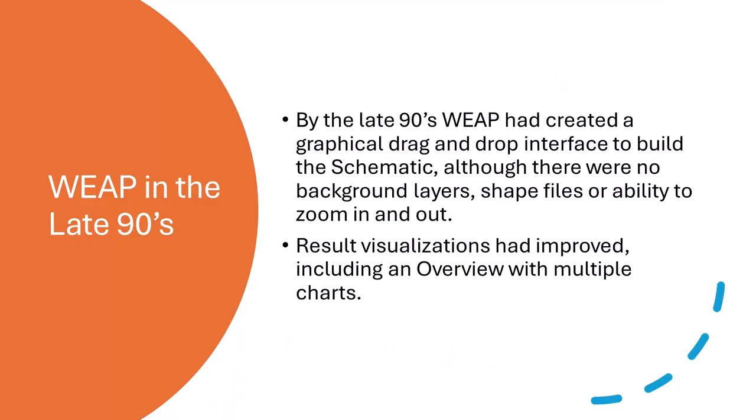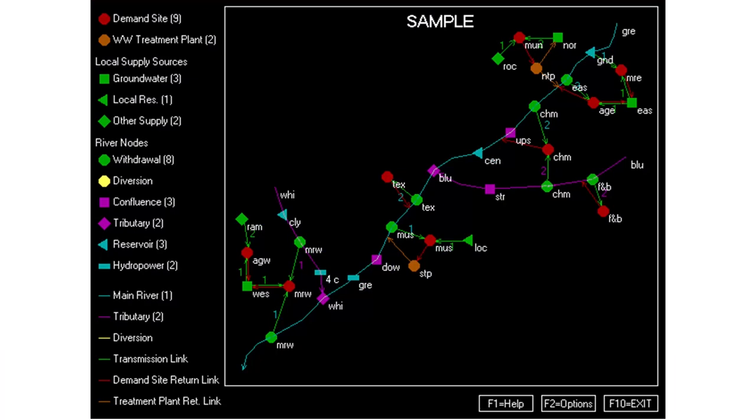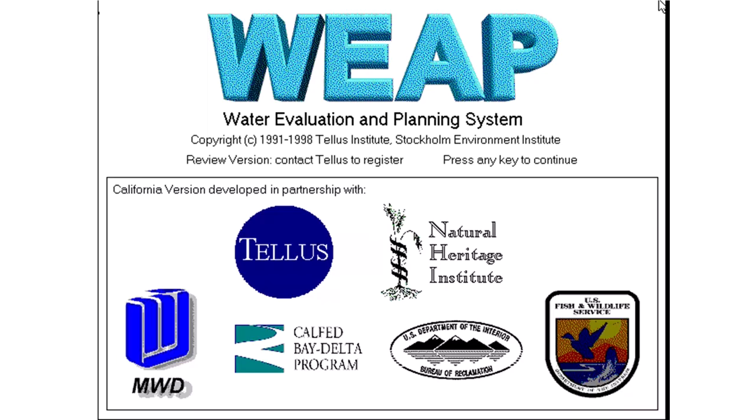By the late 90s, Weep had created a graphical drag-and-drop interface to build the schematic, although there were no background layers, shapefiles, or ability to zoom in and out. Result visualizations had improved, including an overview with multiple charts. In these screenshots, you can see how the interface has changed and improved.